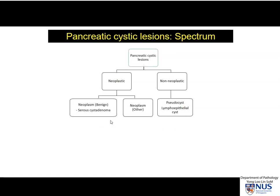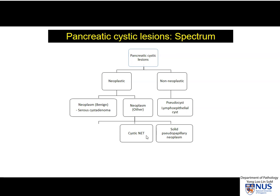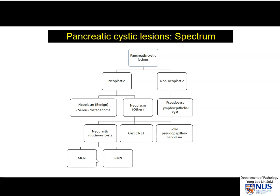Under the neoplastic umbrella, they can be benign — the vast majority of serous cyst adenomas are benign. We also have other neoplasms such as cystic neuroendocrine tumors, solid pseudopapillary neoplasms, which should have rather classical cytologic features, and a very important group: the neoplastic mucinous cysts. Most of the time this comprises two entities — the mucinous cystic neoplasm and the intraductal papillary mucinous neoplasm, or IPMN.